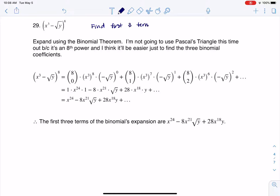Let me write: find first three terms. When I say binomial, I've got my two terms raised to a power. I'm going to use the binomial theorem to expand this. If I wanted to, I could use Pascal's triangle, but I'd have to go down to the eighth level, and I don't know that it's worth it because I only want the first three terms. I don't need every term.